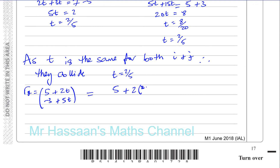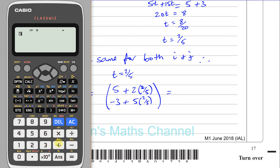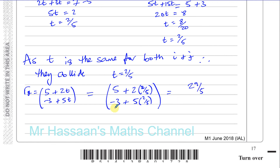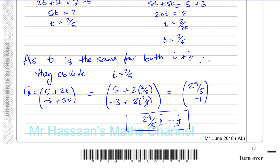So 5 + 2 × (2/5) = 5 + 4/5 = 29/5, and −3 + 5 × (2/5) = −3 + 2 = −1. The position vector of the point of collision is (29/5)i − j. That's the answer to part d and completes question five.